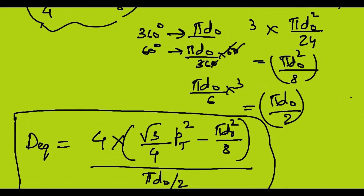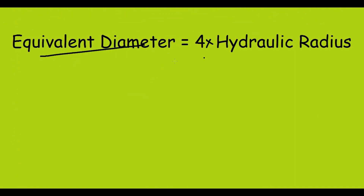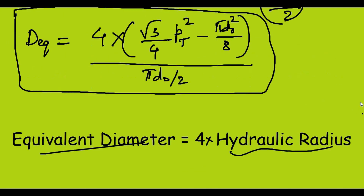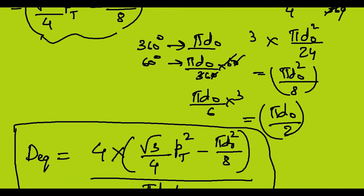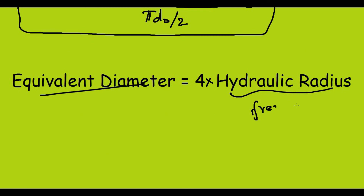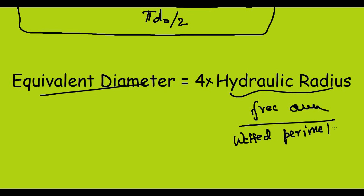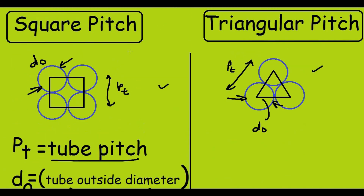The last important point is the hydraulic radius. Remember that the equivalent diameter is 4 times the hydraulic radius. The free area divided by the wetted perimeter equals the hydraulic radius, and when multiplied by 4 gives the equivalent diameter. This was all about square pitch and triangular pitch. Thank you.